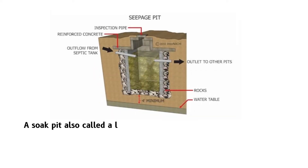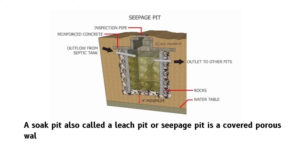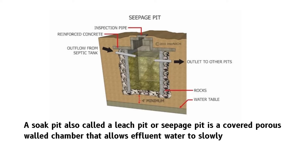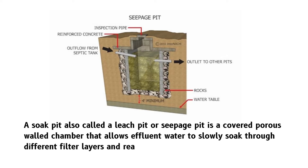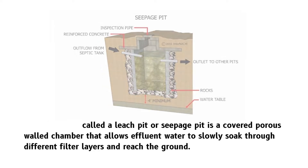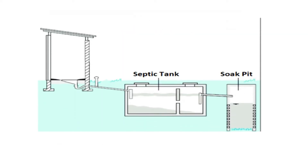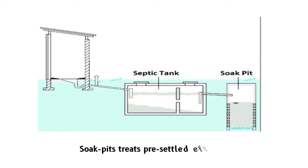A soak pit, also called a leach pit or seepage pit, is a covered porous walled chamber that allows effluent water to slowly soak through different filter layers and reach the ground. A soak pit chamber receives the effluent coming out from a primary treatment plant like a septic tank, aerobic treatment system, etc. Hence, it partially treats a pre-settled effluent.